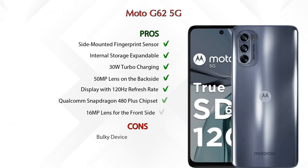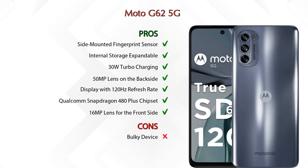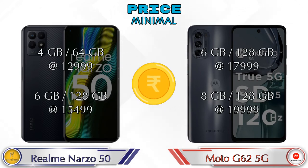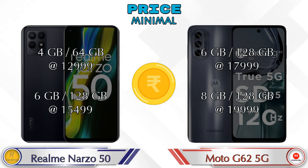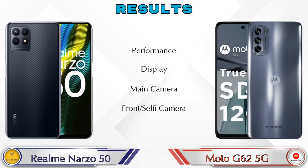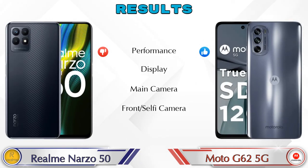Both phones have the same seven pros and one con. For pricing: Narzo 50 is available in a 4GB RAM + 64GB storage variant at ₹12,999 and a 6GB RAM variant as well. Moto G62 5G is available in a 6GB RAM + 128GB storage variant at ₹17,999 and an 8GB RAM + 128GB storage variant at ₹19,999.